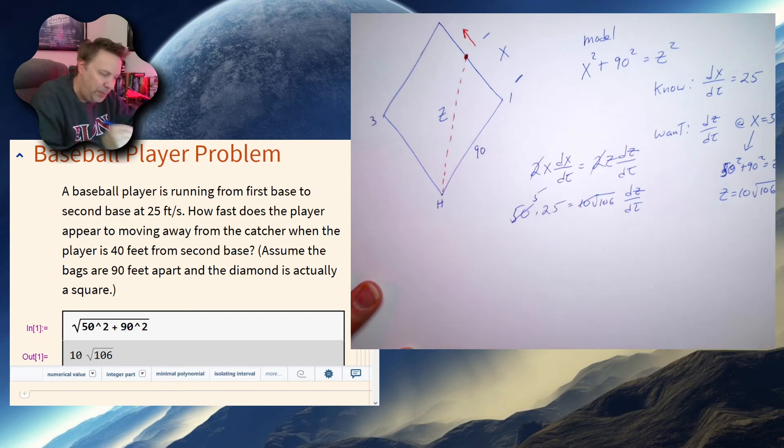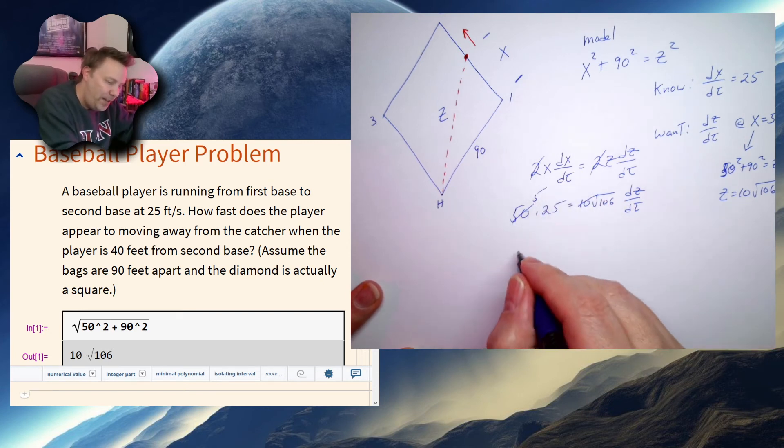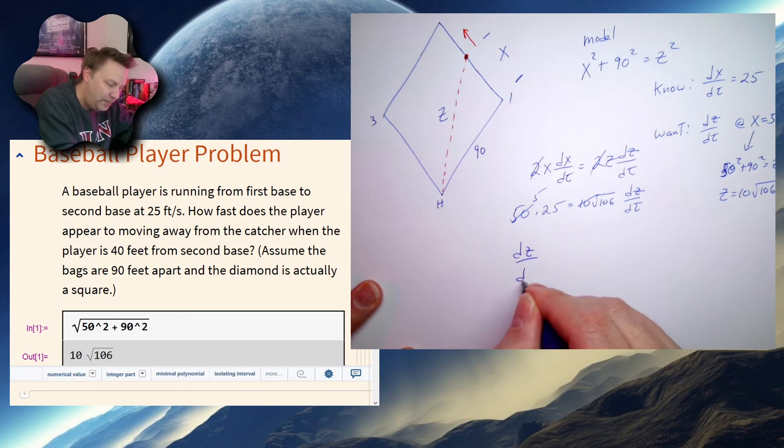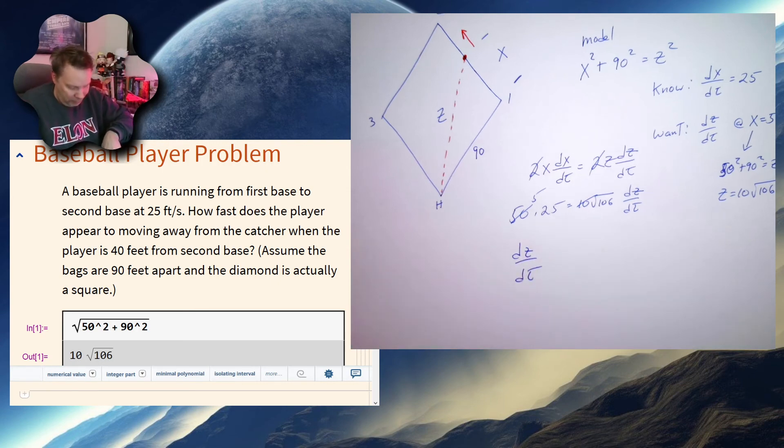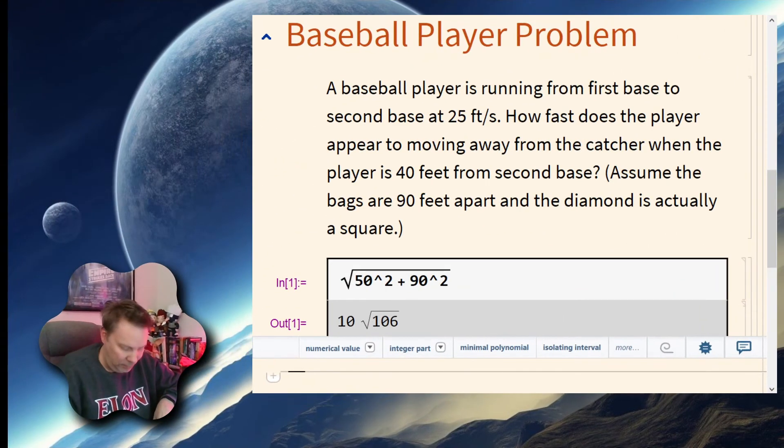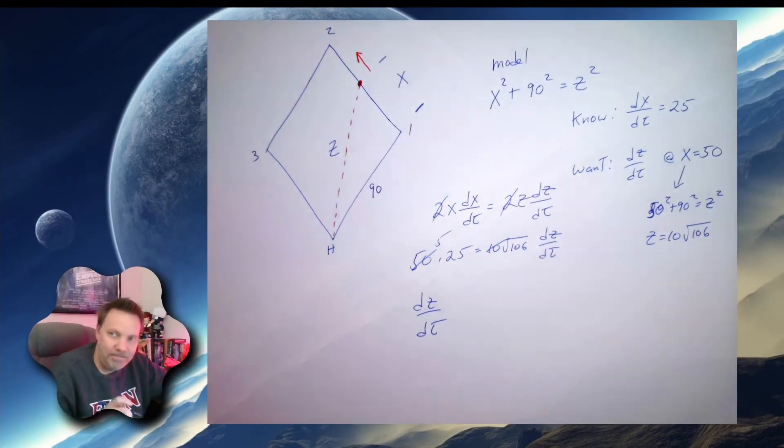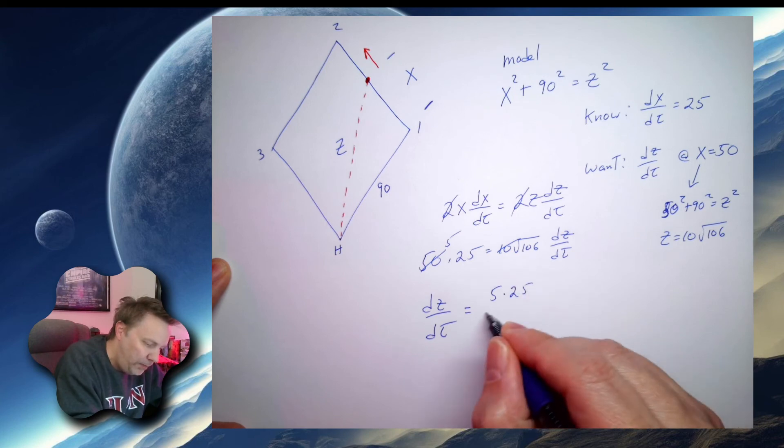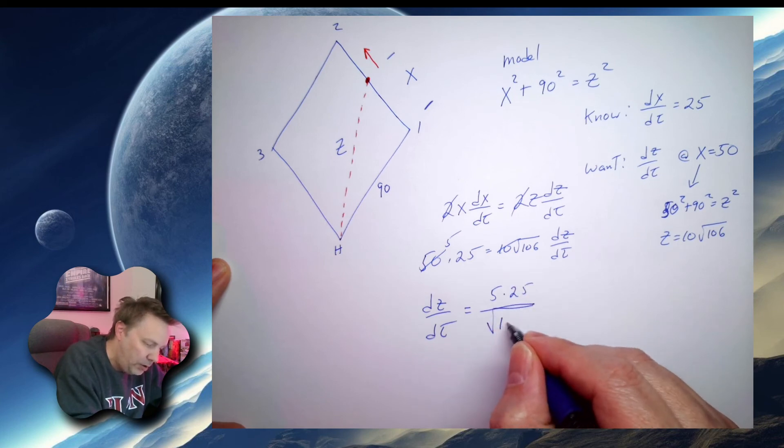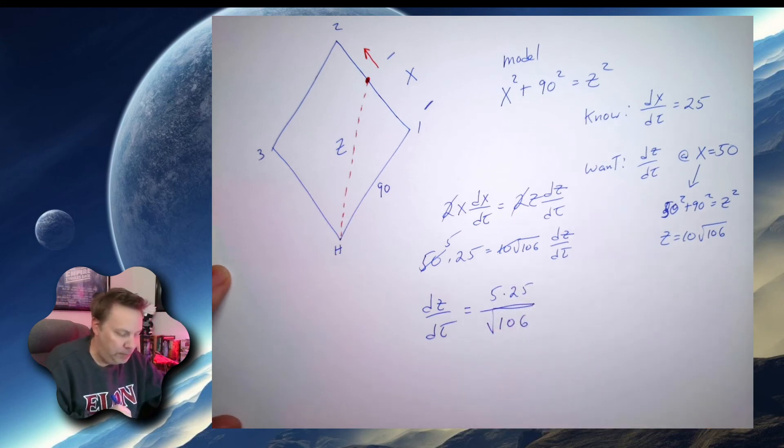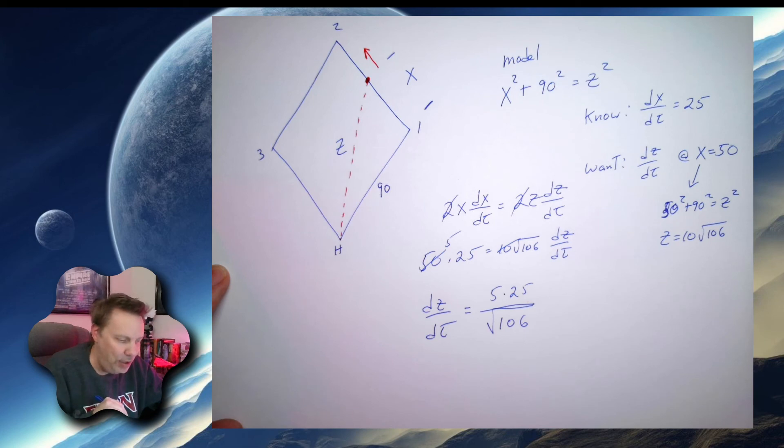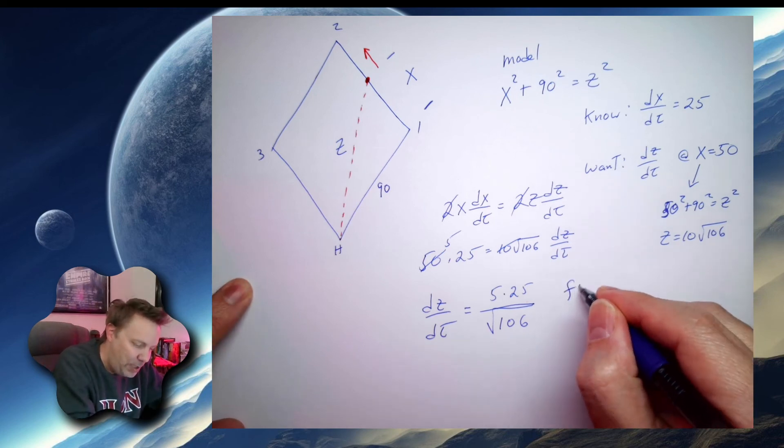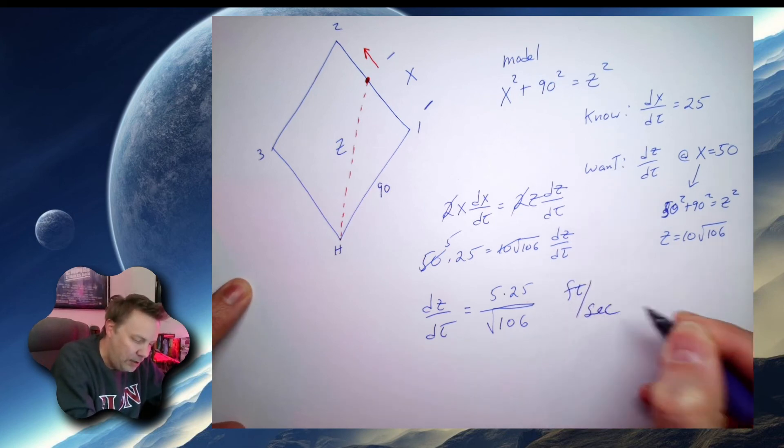That's equal to 10 root 106 dz dt. I'm going to cancel these, so it's going to be a 5. So I'm left with dz dt being 5 times 25 over root 106. Now, units, z is measured in feet, t is measured in seconds. This is going to be in feet per second.